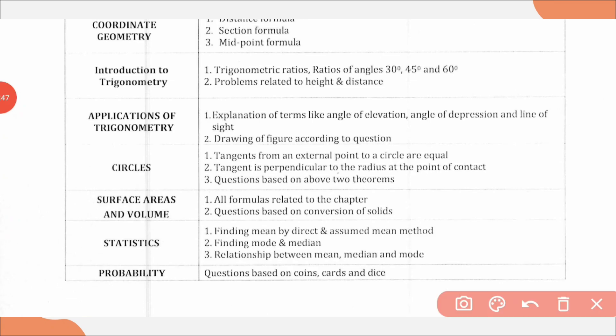Applications of Trigonometry: explanation of terms like angle of elevation, angle of depression, and line of sight; drawing of figures according to question. From Circles chapter: tangent from an external point to a circle are equal, tangent is perpendicular to the radius at point of contact, and questions based on these two theorems.